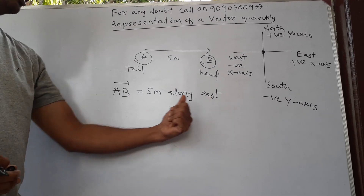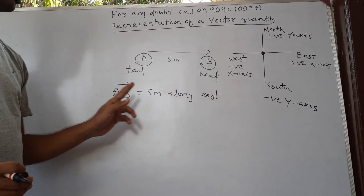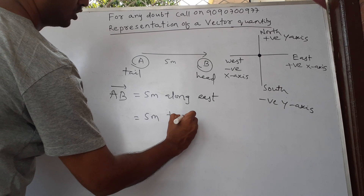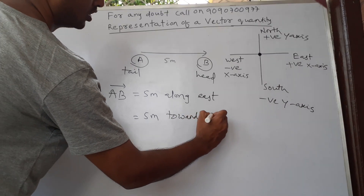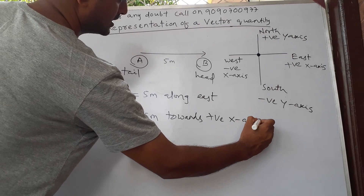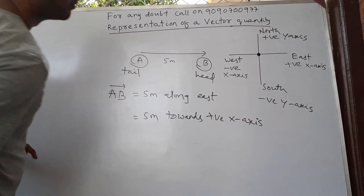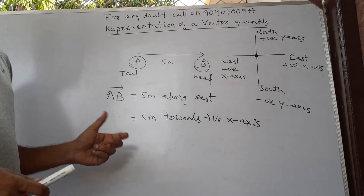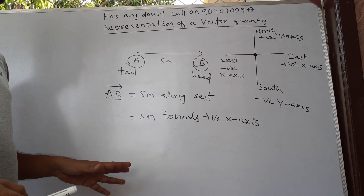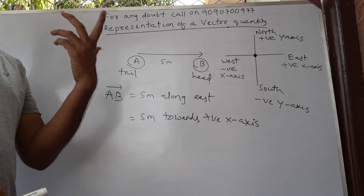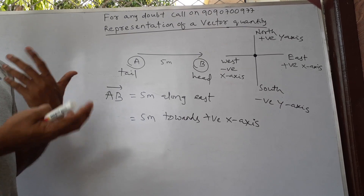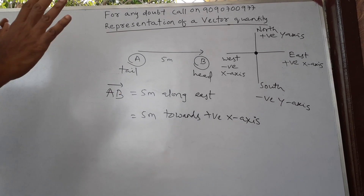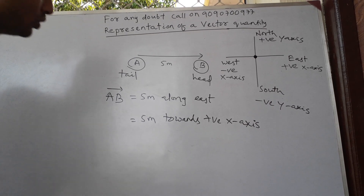Now I can say that AB is a vector quantity because I have given magnitude and direction. I can write it another way: 5 meters towards positive x-axis — same thing. In my next video I will be discussing unit vectors, and once you learn what a unit vector is, it will be very easy to represent a vector using unit vectors.